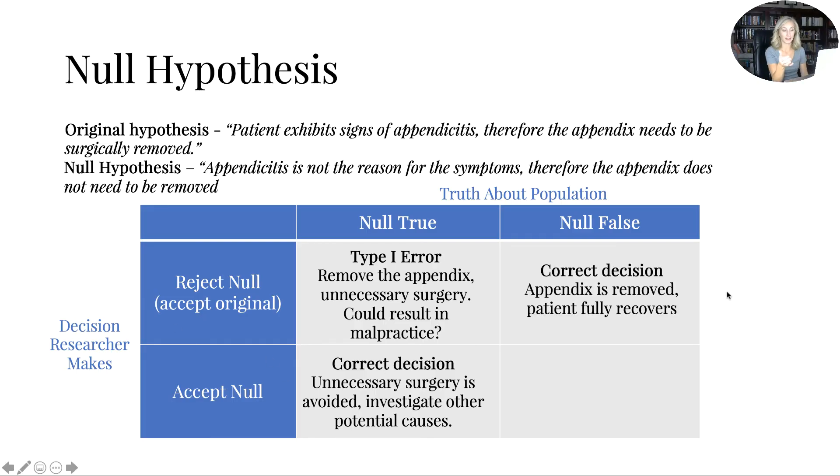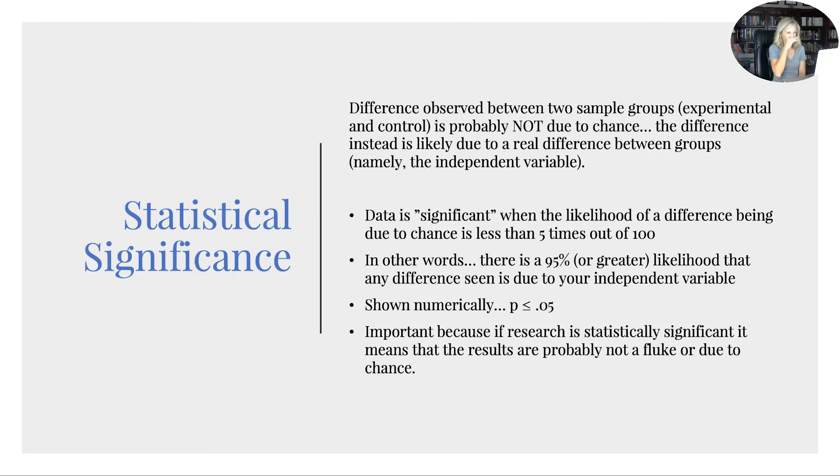So if they accept the null and the null is true, they've made the correct decision. Unnecessary surgery is avoided. They investigate other potential causes to figure out what's going on. Now, they make another correct decision here if the appendix is removed and the patient fully recovers, right? They accept, or I'm sorry, accept the original and the null is actually false. Like that's a good thing, right? And then the last one with a type two error, they don't remove the appendix, but it actually is appendicitis. The appendix explodes and risks the patient's death. That's not good.